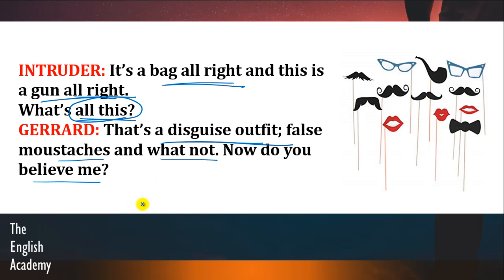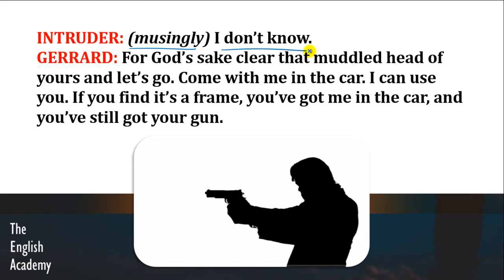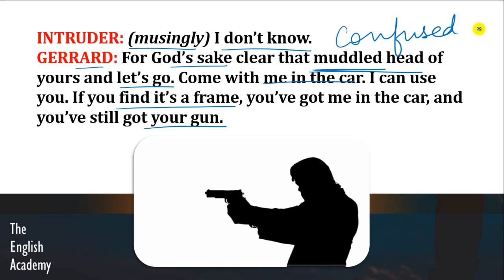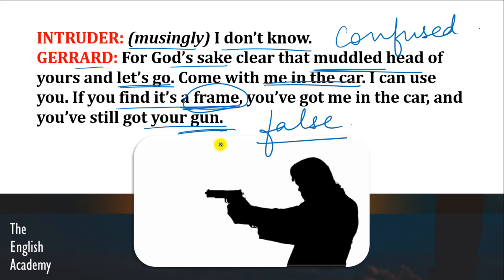Toh what is Gerard doing? Woh is intruder ko apni baaton mein uljhaane ki koshish kar raha hai, aur usse yeh batane ki koshish kar raha hai ki woh bhi ek criminal hai. Intruder says musingly: 'I don't know.' Gerard says: 'For God's sake, clear that muddled head of yours and let's go. Come with me in the car. I can use you. If you find it's a frame, you've got me in the car and you've still got your gun.' Muddled means confused. Frame means something which is false — jhoota hona. Intruder abhi bhi confused hai, lekin Gerard kehta hai — please bhagwan ke liye, apni confused dimaag ko chhodo aur meri baat maano. Agar tumhe laga bhi ki mein jhoot bol raha hoon, toh tumhare paas gun to hai.